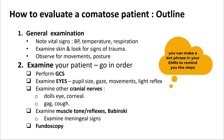In summary, to evaluate a comatose patient: perform a general physical examination and pay attention to blood pressure, temperature, and respiration. Examine the skin and look for signs of trauma. Observe for movement and posture. Perform a neurological exam in order: GCS first, then examine the eyes for pupillary size, gaze, movements, and light reflex. Then examine other cranial nerves — perform doll's eye, corneal, gag, and cough reflexes. Next, assess muscle tone and reflexes and perform a Babinski. Finally, examine for meningeal signs and perform fundoscopy.